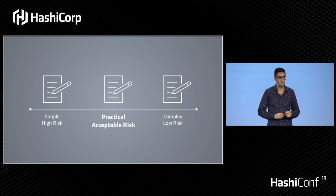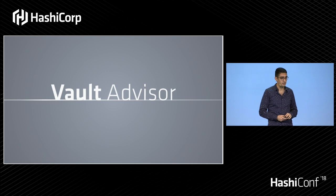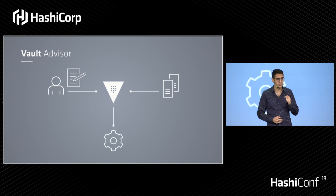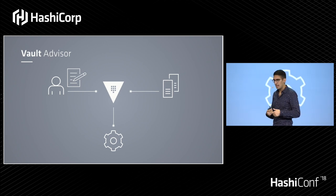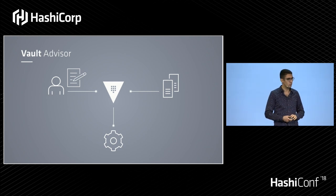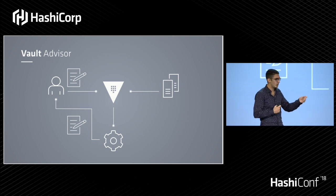How do we find these middle policies? That is exactly what we've been looking at solving with a new project we're calling Vault Advisor. The idea behind Vault Advisor is: how do we first start by consuming what is actually happening? We tail off of Vault's audit log and observe in the real world what clients, what users, what applications are consuming what set of credentials — we can observe real-world behavioral patterns. Then we want to generate a policy diff between how the system has actually been configured versus the way it's being used in real life.